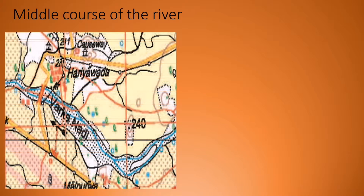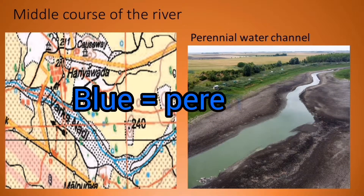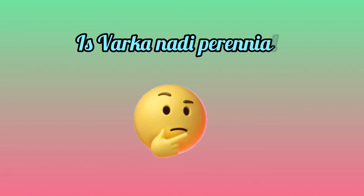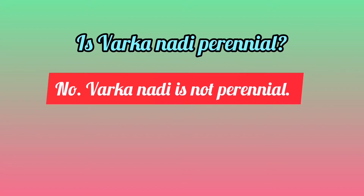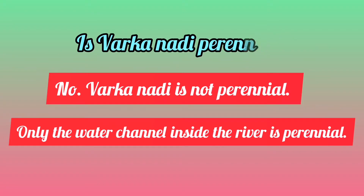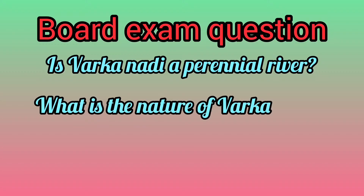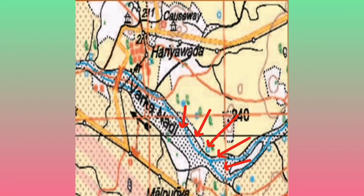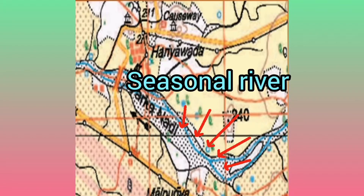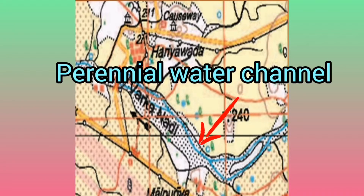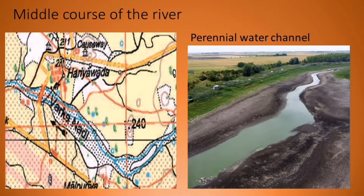In the middle course of the river, we can also see a perennial water channel. Look at this Varkanadi — can you see a blue color line inside the river? We know that blue color always represents perennial. But does this blue color mean that Varkanadi itself is a perennial nadi? No — Varkanadi is not perennial. Only the water channel inside the Varkanadi is perennial. So in the board, they may ask: is Varkanadi a perennial river, or what is the nature of Varkanadi? Varkanadi has black dots — it is black and white — so it is a seasonal nadi. But it has a small blue color line, which is a perennial water channel.